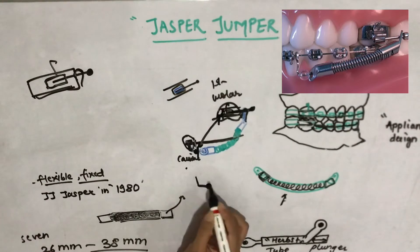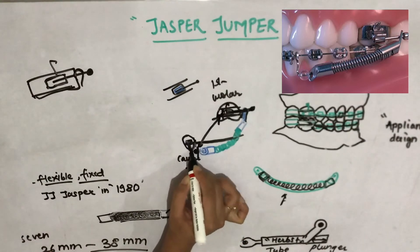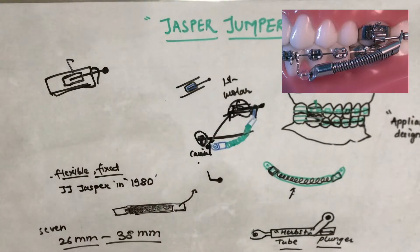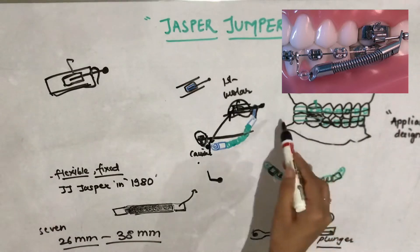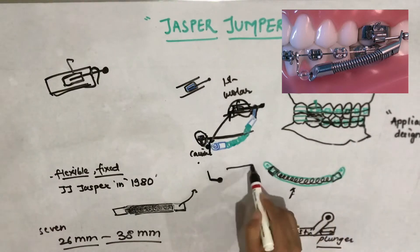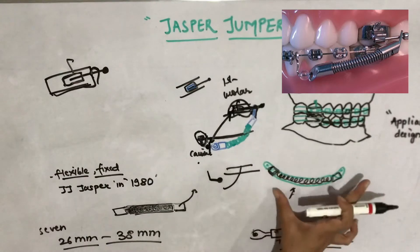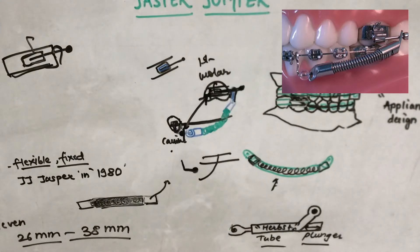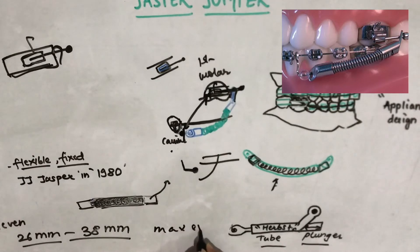The mandibular attachment is anterior (distal to the canine) and the maxillary attachment is posterior, both fixed to the existing fixed appliance. Care must be taken that the arch wire is thick enough so it does not fracture when the module is attached. The Jasper Jumper is indicated in skeletal Class 2 malocclusion with maxillary excess and mandibular deficiency.